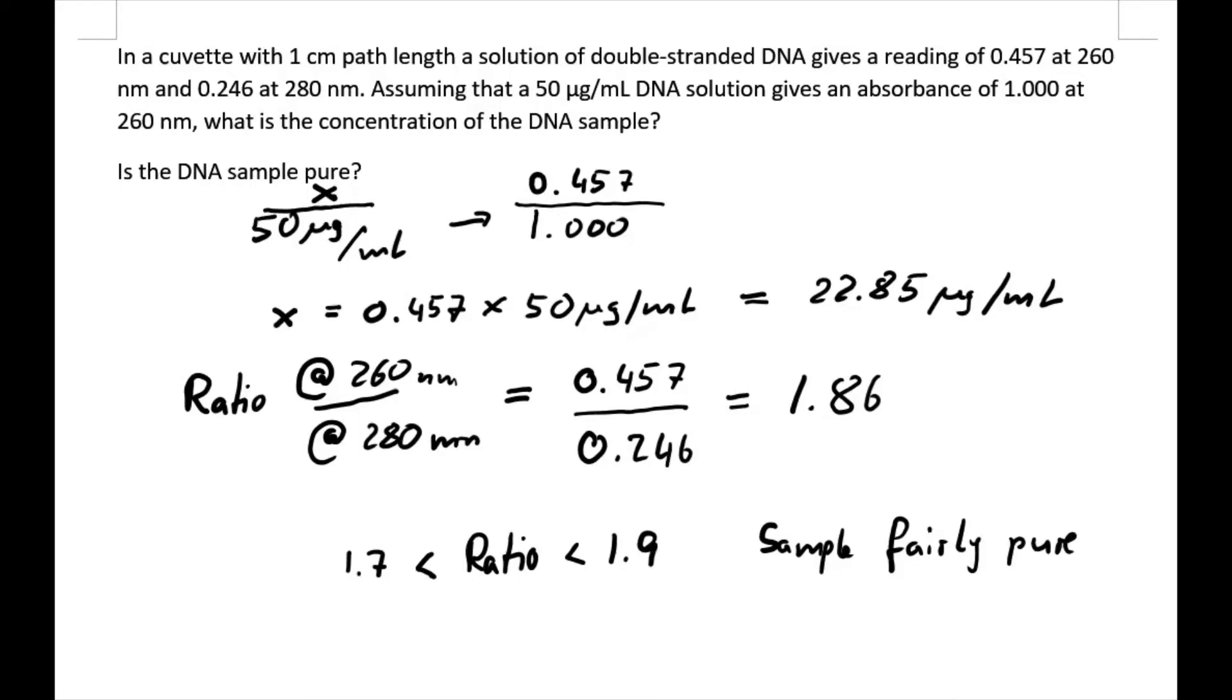If it is smaller than 1.7 or larger than 1.9, it usually indicates contaminants that absorb at 260 or 280 nanometers, meaning the sample is not pure. But in our case with 1.86, we can be fairly confident that the sample is reasonably pure.